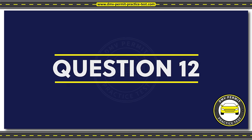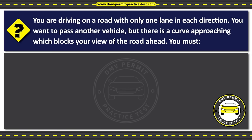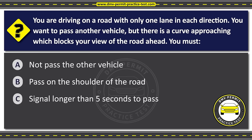Question twelve. You are driving on a road with only one lane in each direction. You want to pass another vehicle, but there is a curve approaching which blocks your view of the road ahead. You must. Option A: Not pass the other vehicle. Option B: Pass on the shoulder of the road. Option C: Signal longer than five seconds to pass. The correct answer is Option A: Not pass the other vehicle.